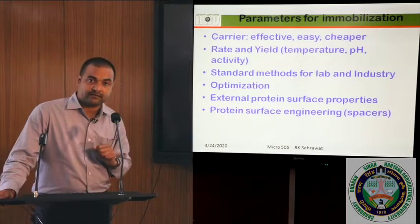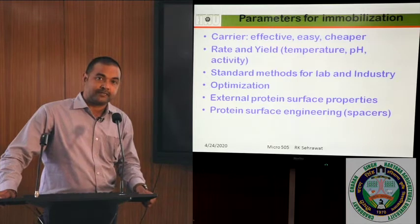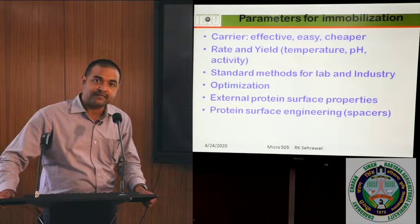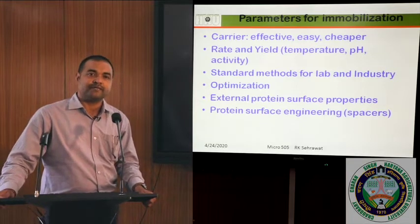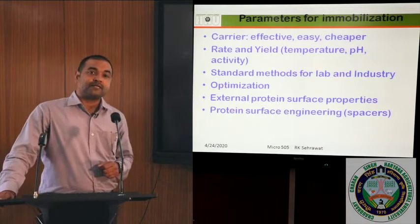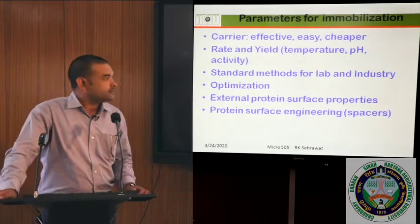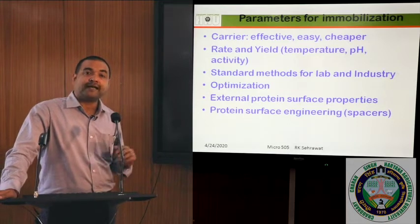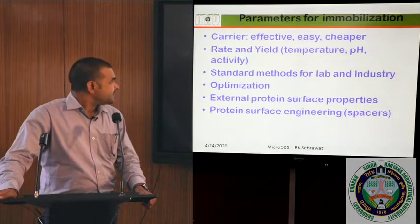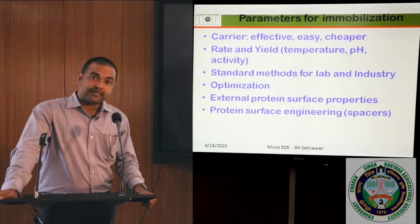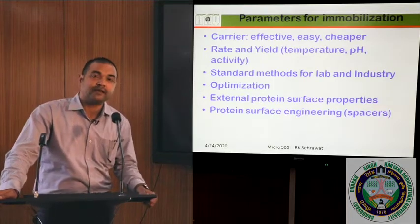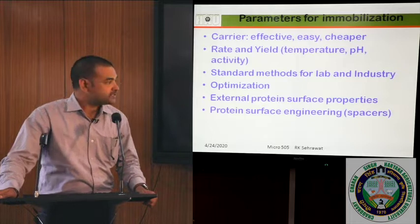The very first parameter is the carrier. Whatever carrier you are selecting for the immobilization, it must be effective, easy to immobilize, and undoubtedly it must be cost-effective and cheaper. The rate and yield of the immobilized enzyme is also a major factor. In this, the temperature, pH optima, and the activity of the immobilized enzyme are major concerns. Then there must be a standard method which can be reproduced in the industry — whatever method you are designing in the lab must be reproducible industrially.